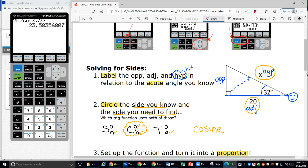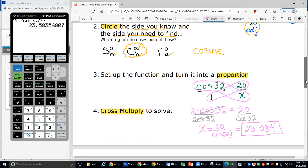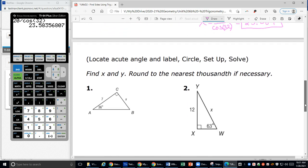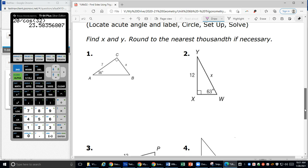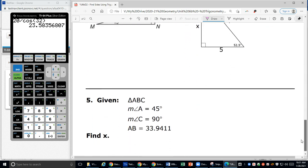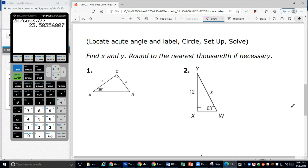In the next video, when we come back, we will practice with these practice problems, finding X. So again, we're going to find our acute angle and label our triangle, then circle the side we know and the side we want to find, set up our proportion, and cross multiply to solve. In the next video, we will practice with these practice problems. Come on back. I look forward to seeing you in the next video. Thanks for watching. Bye.